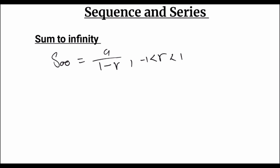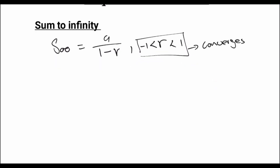If it satisfies this condition, we say that it converges. And if it does not satisfy this condition, we say it diverges.